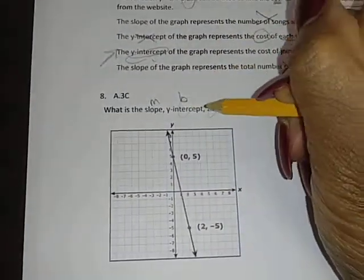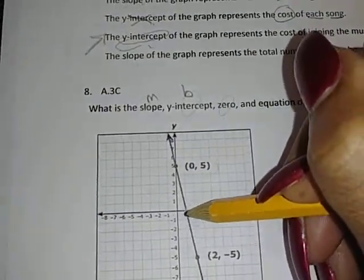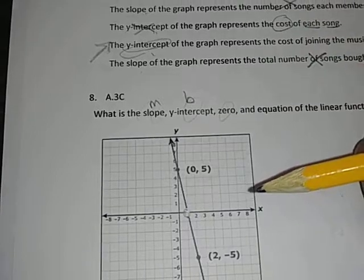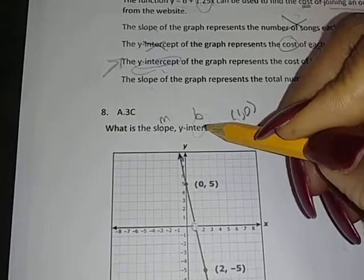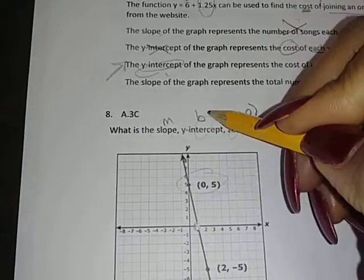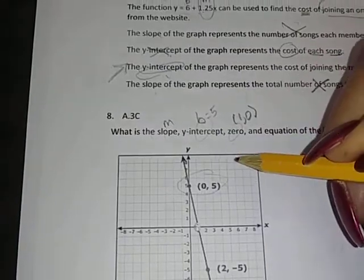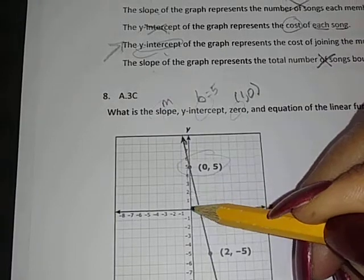Zero is the x-intercept? Well, it crosses—look at that right there—at (1,0). So the x-intercept is (1,0). What is B? (0,5). And the slope? Well, go down 1, 2, 3, 4, 5 to the right 1.